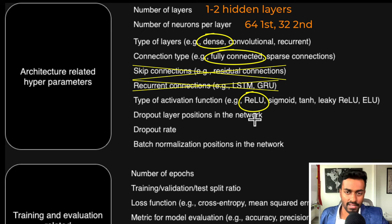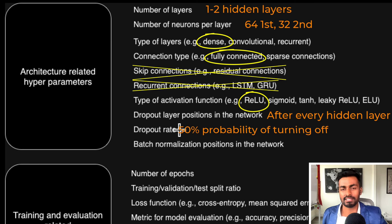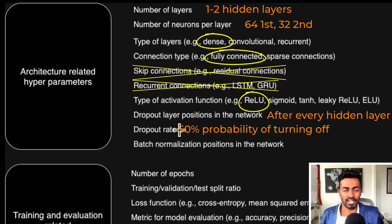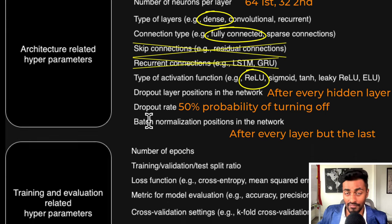The dropout positions in the network could be after every hidden layer with the dropout rate being set to initially 0.5 to start out. That is, there is a 50-50 chance that a given neuron can turn off or on. The batch normalization positions in the network could be after every single layer except for the final layer.